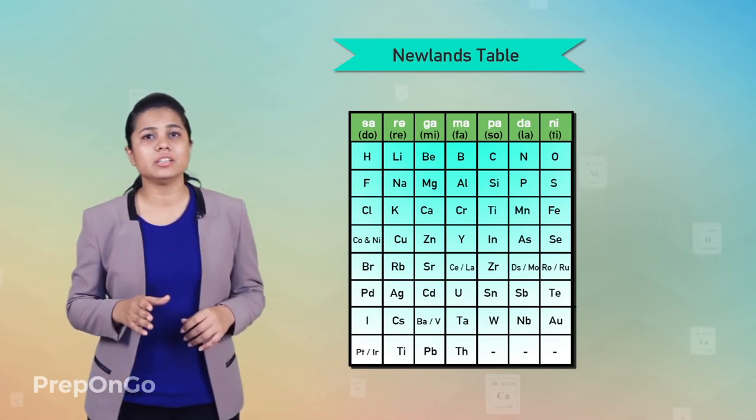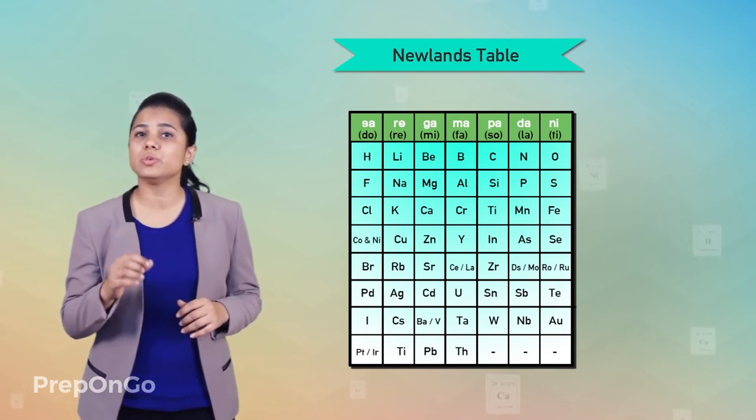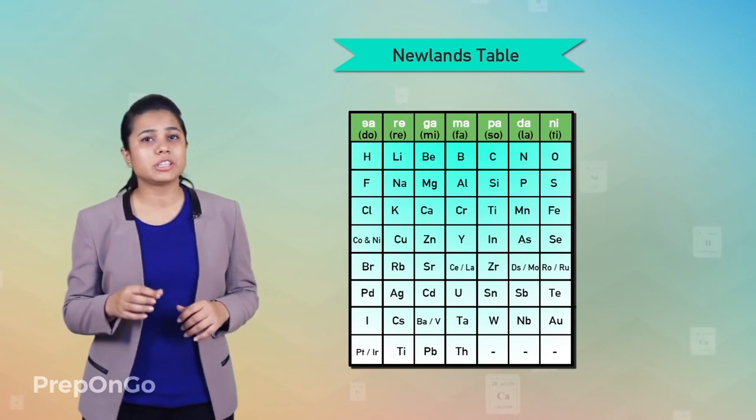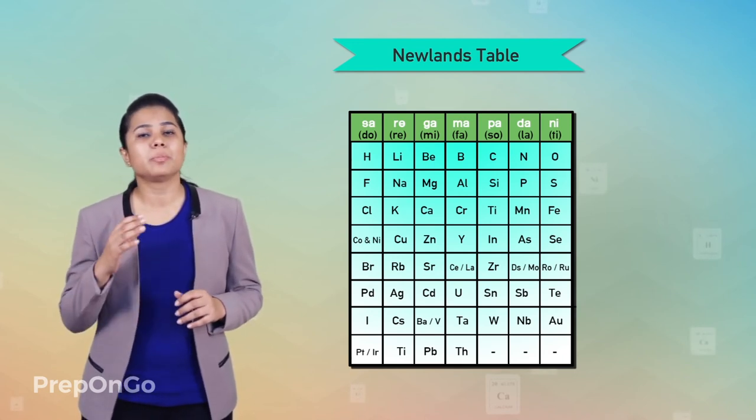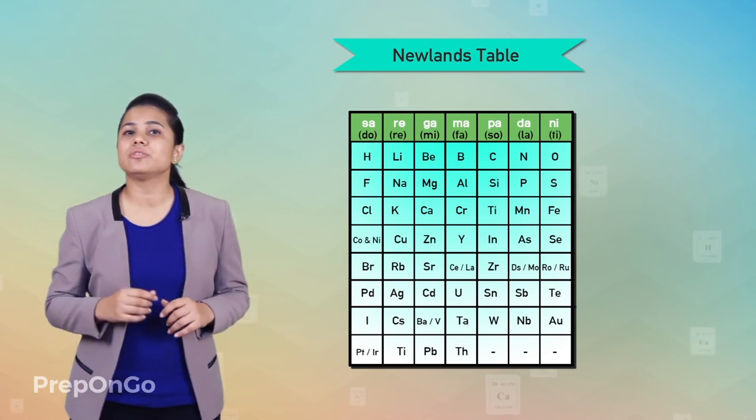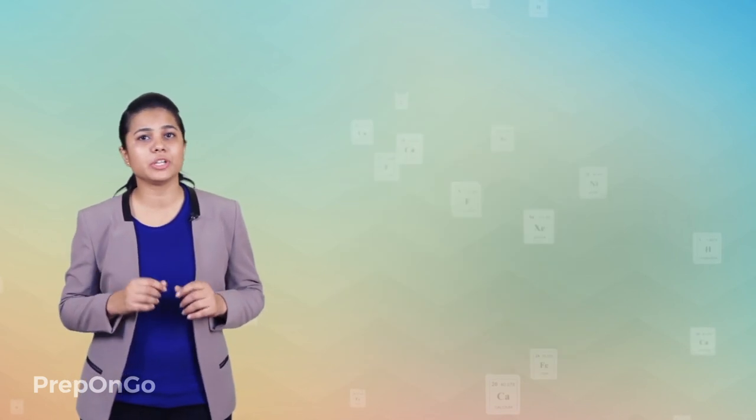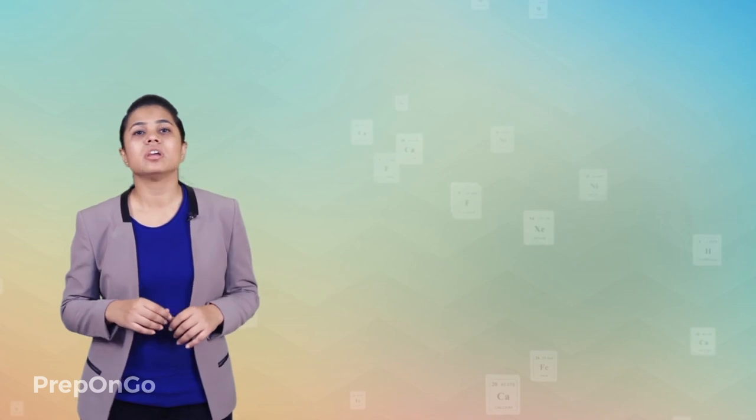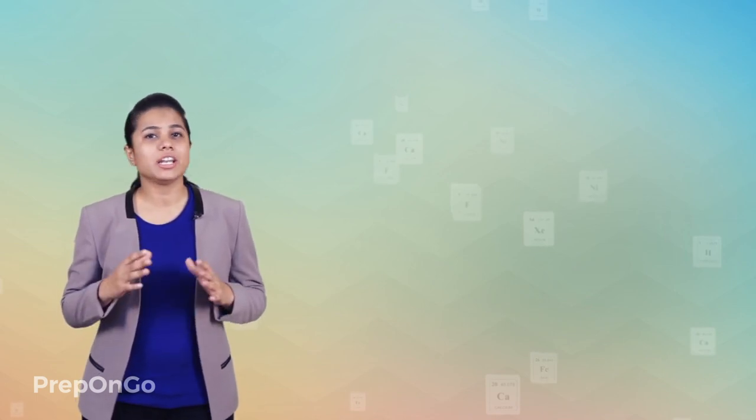In 1869, just after three years of Newland's law of octaves, Dimitri Ivanovich Mendeleev proposed the periodic law which led to the formulation of Mendeleev's periodic table of elements. We are going to see it in detail in our next video.